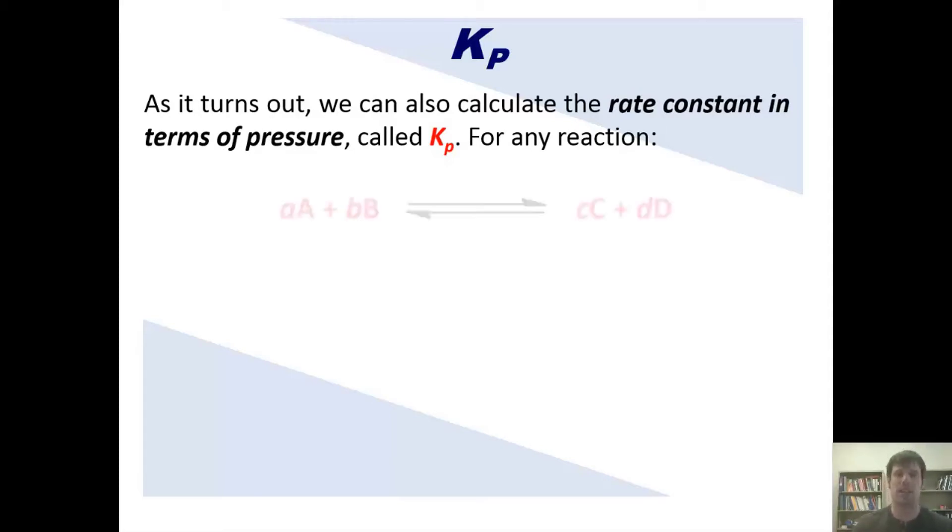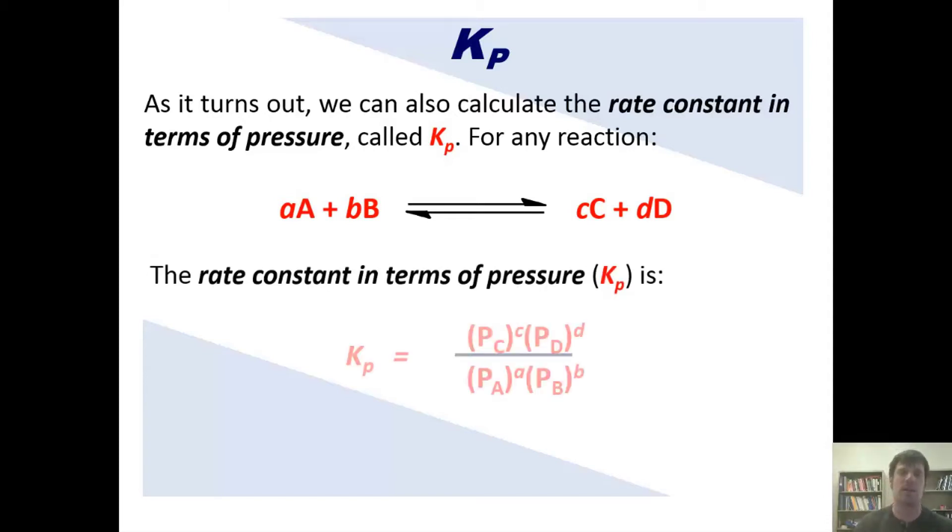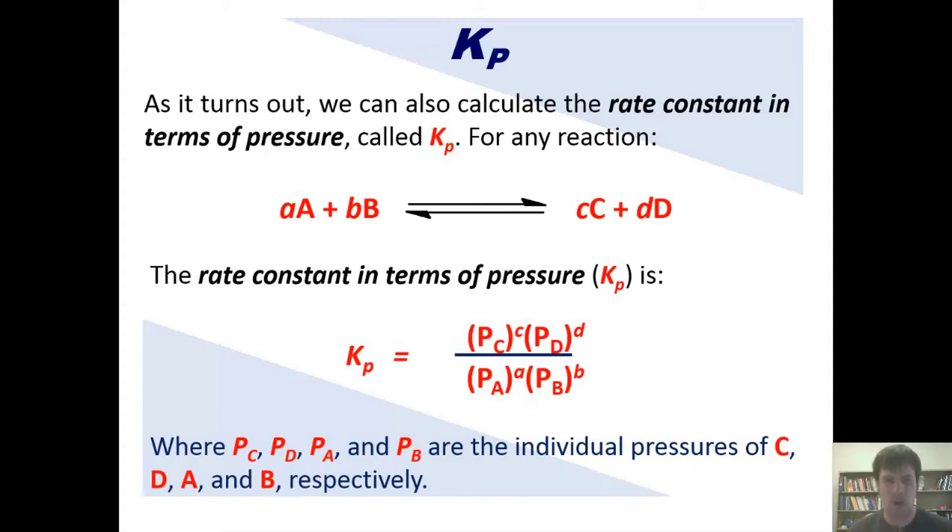Thus, for any reaction like this one, in which each of the components are gases, and they have to be gases, the rate constant in terms of pressure, Kp, is equal to this. Where P_C, P_D, P_A, and P_B are the individual pressures of gases C, D, A, and B, respectively.